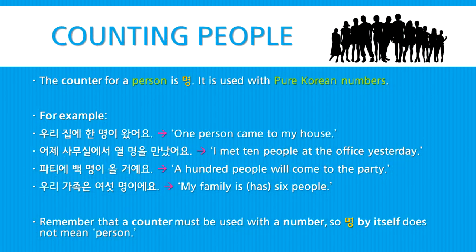Here are some examples. 우리 집에 한 명이 왔어요 — One person came to my house. 어제 사무실에서 열 명을 만났어요 — I met ten people at the office yesterday. 파티에 백 명이 올 거예요 — A hundred people will come to the party. 우리 가족은 여섯 명이에요 — My family has six people. Remember that a counter must be used with a number, so 명 by itself does not mean a person.